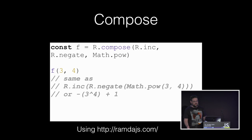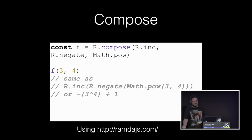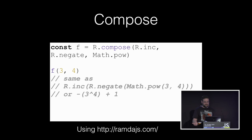Compose is a function that can join functions together into a new function. Calling f is the same as calling pow, then negate, then increment on the values. Compose is simple because it enables us to remove braiding between using the behavior of multiple functions together as a named reference from the actual function invocation — we can join these functions together, give it a reference, and call it later.